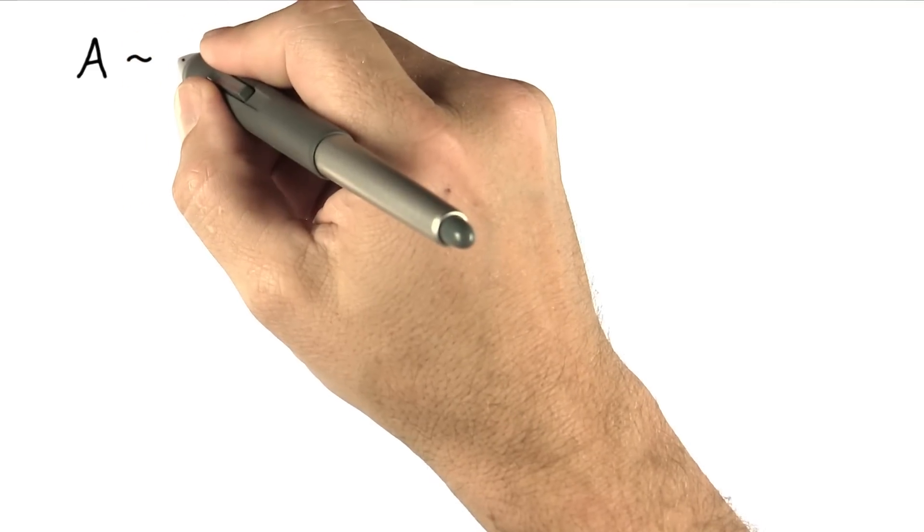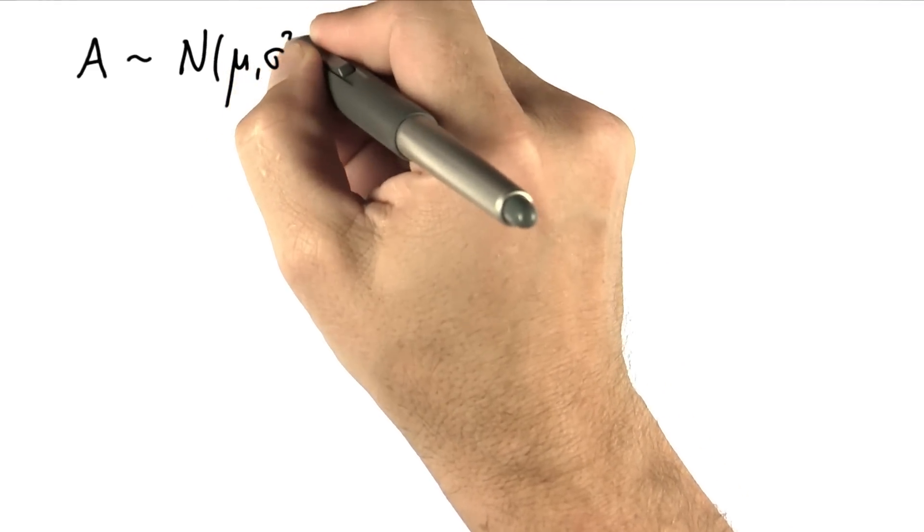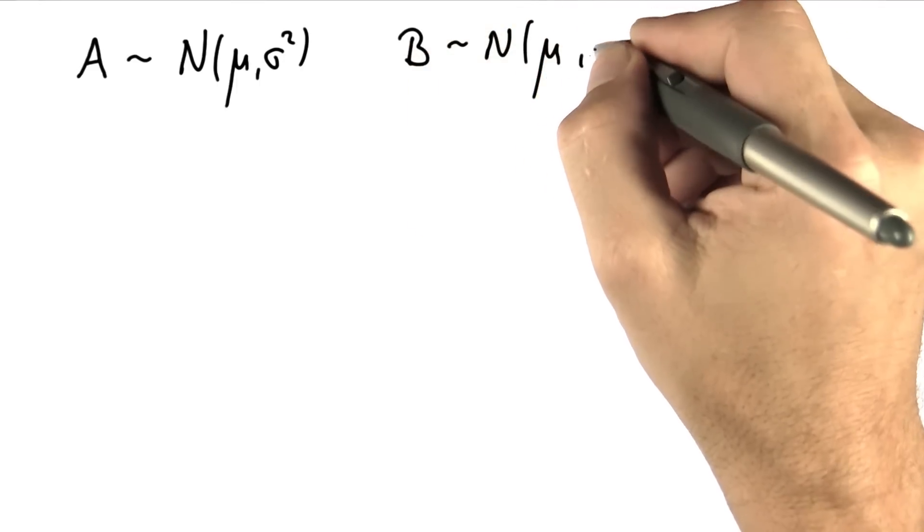So let me do a final quiz. This is related to playing golf. We have a normal distribution with mu and sigma squared, from which we draw A. We do the same with B, using the same mu and sigma squared.